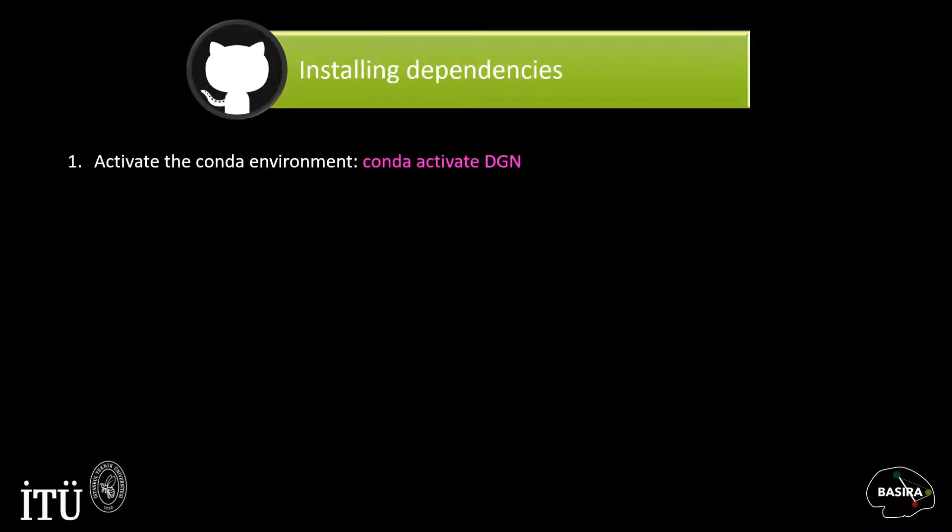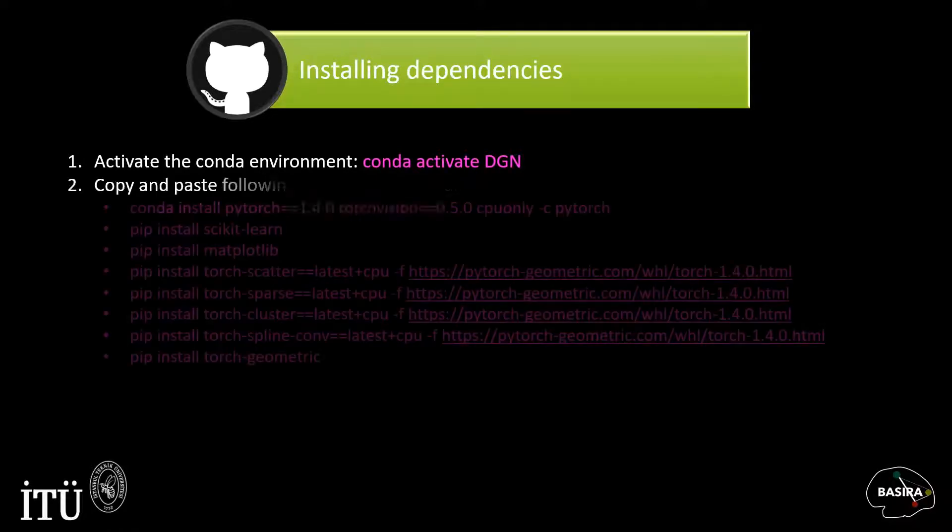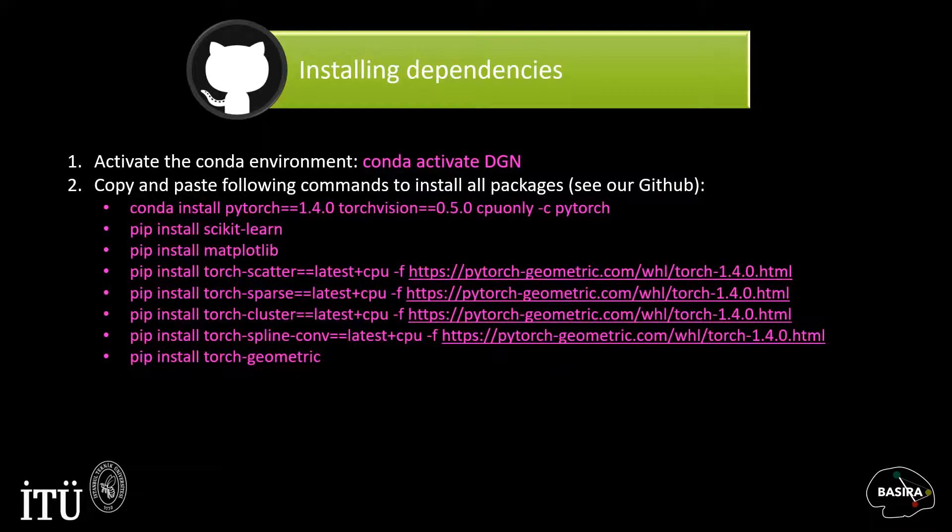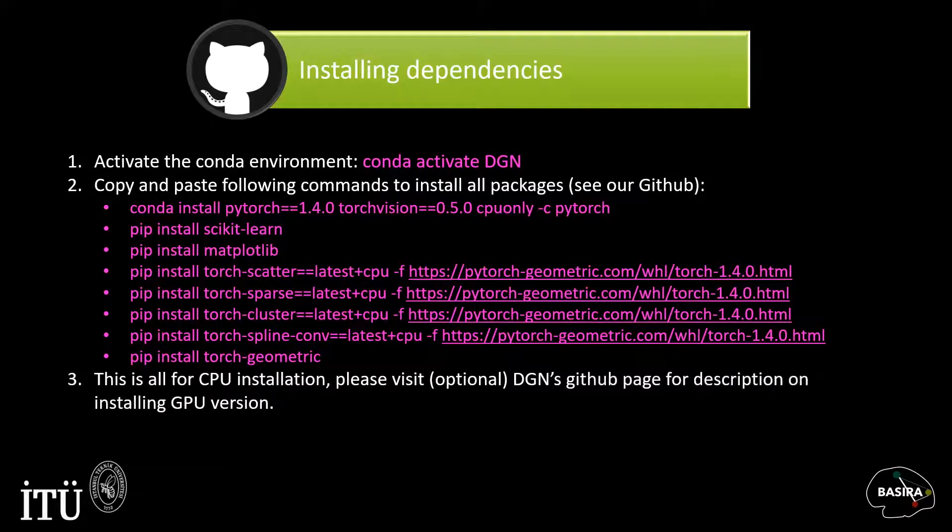Next, to install dependencies, you first need to activate the environment you have created by typing conda activate DGN. Then copy-paste the following commands to install needed packages. You can find them on our GitHub page. This is all for CPU installation. CPU installation is enough to train a model on medium-sized datasets. However, it is also possible to run DGN's code on GPU. Please check our DGN GitHub page for details.